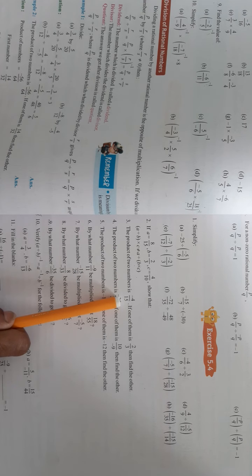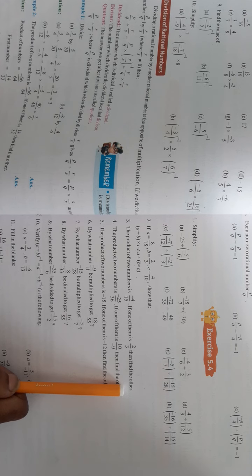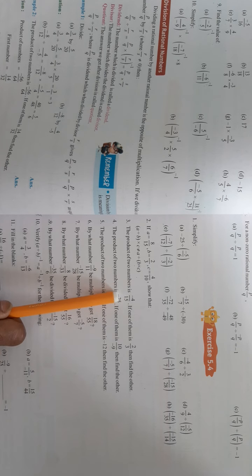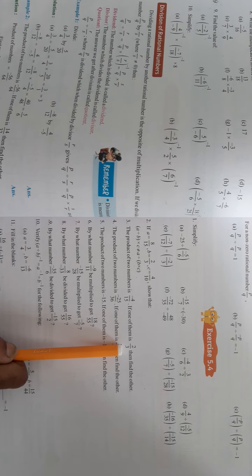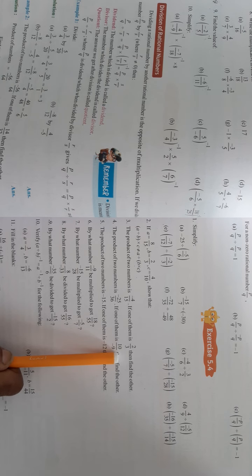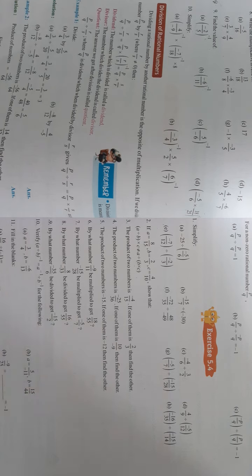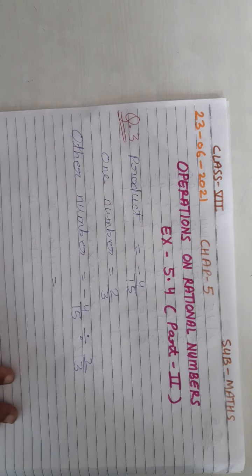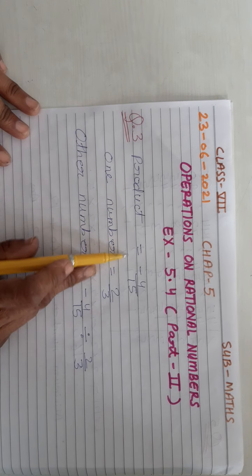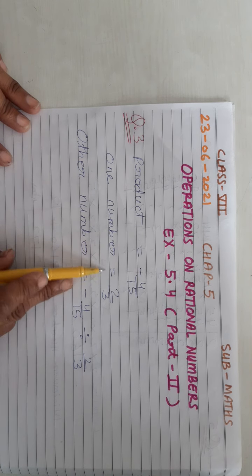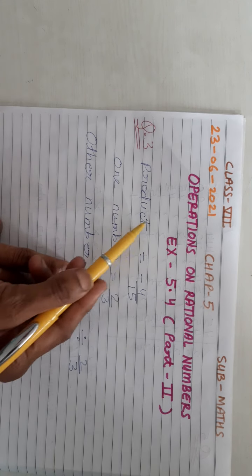The product of two numbers is minus 4 upon 15. If one of them is 2 upon 3, then find the other. So the product is minus 4 upon 15, and one number is 2 upon 3. We need to find the other number. We write: other number equals product divided by the known number.